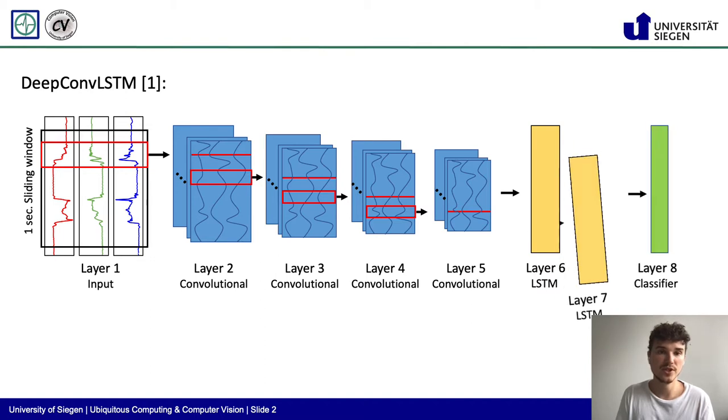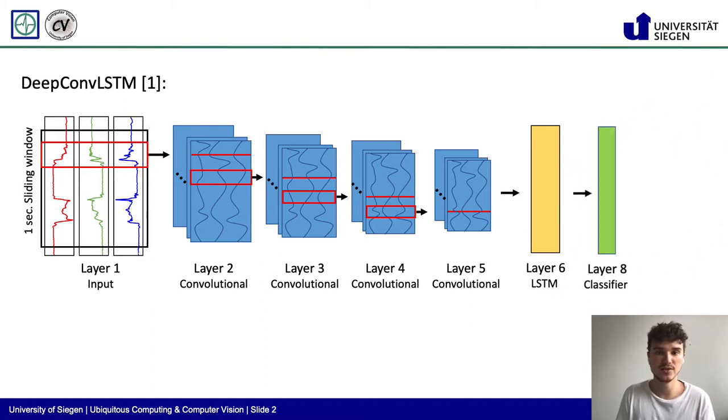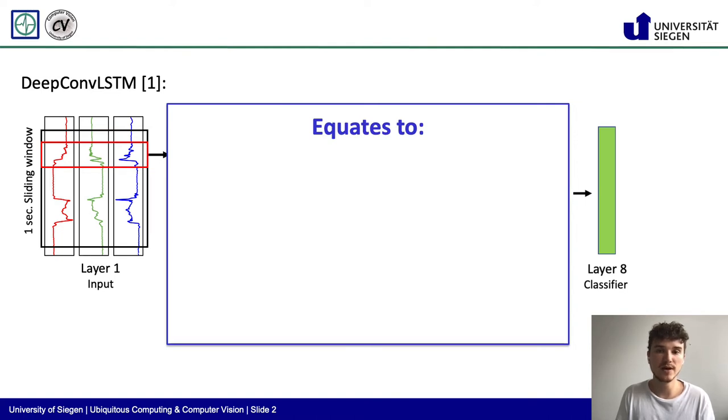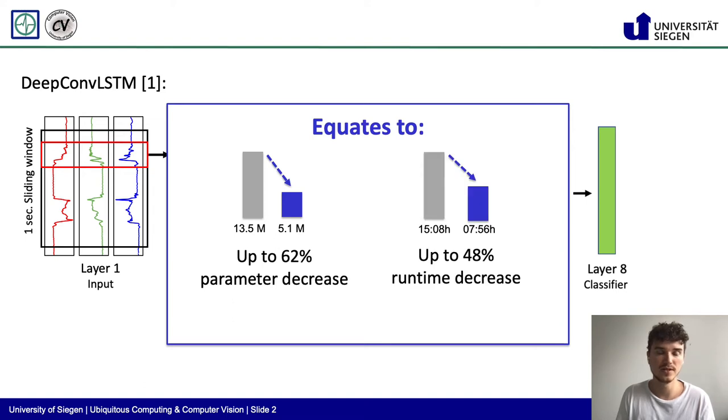In our paper, we suggest to simplify the original architecture by removing the second layer of the LSTM, thus employing a one-layered instead of a two-layered LSTM. The LSTM is parameter-wise by far the largest part of the architecture. Omitting one LSTM layer thus resulted in a decrease of up to 62% in parameters and of up to 48% in runtime during experiments.